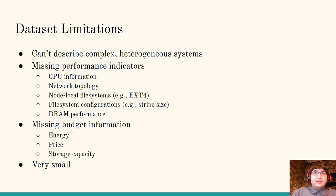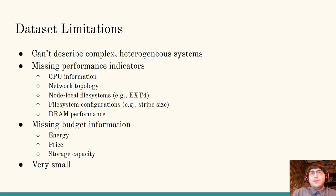Before moving on to the modeling, we'll discuss some of the limitations of this dataset. It's difficult to describe complex heterogeneous systems with the IO500 schema. A storage node may contain more than one type of storage device, but the IO500 assumes only one type of device per node. We found that many submissions were not able to fully capture the design of their systems with this schema, which resulted in inconsistency and information being lost. Furthermore, the dataset does not account for various important performance indicators such as CPU, network topology, local file systems, file system configurations, and DRAM performance.